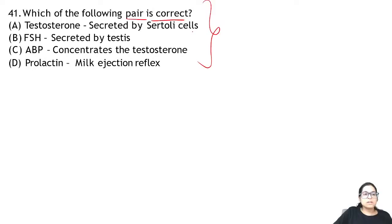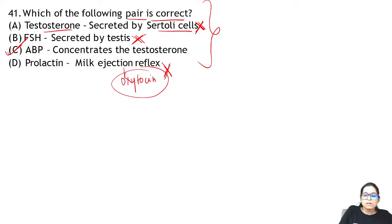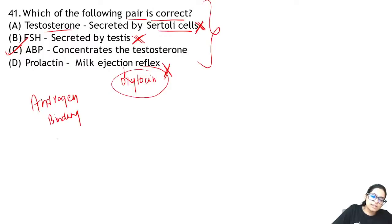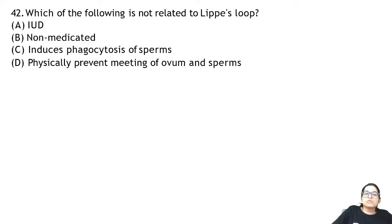Question 41: which pair is correct? Testosterone is NOT secreted by Sertoli cells — wrong. FSH is NOT secreted by the testis — it comes from the anterior pituitary. Prolactin produces milk — milk ejection is done by oxytocin. The correct option is that ABP (androgen binding protein) concentrates testosterone in the seminiferous tubules.